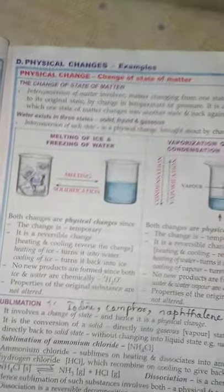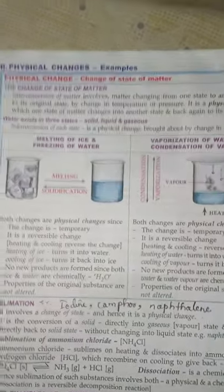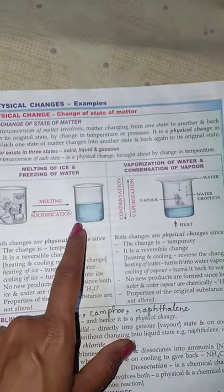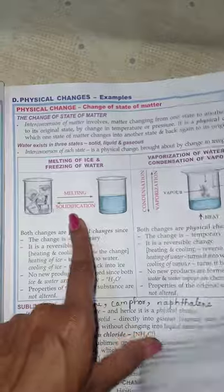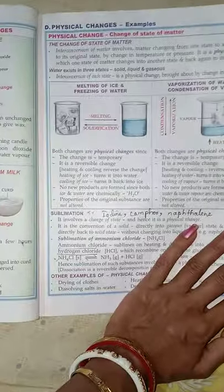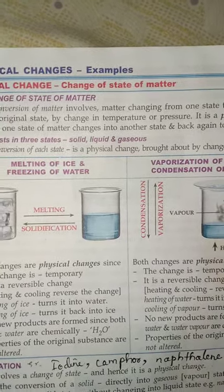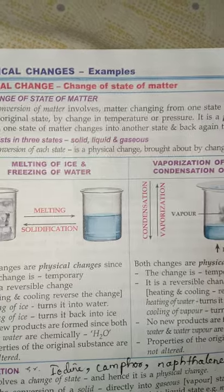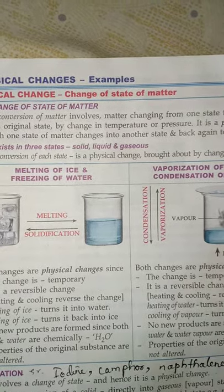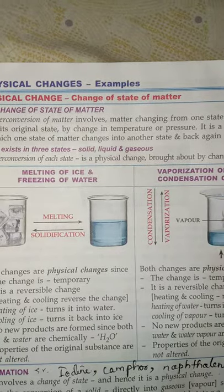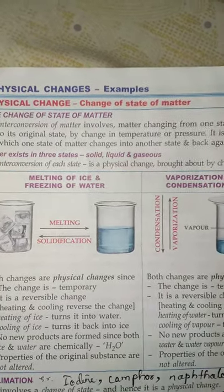Here we have the change in state of matter. Ice when it undergoes melting changes to water; water on getting frozen — the method is known as solidification — gives you ice back again. Both changes, ice to water or solid to liquid, are physical changes because they are temporary and reversible. On heating ice it turns to water and on cooling it turns back to ice again. No new products are formed and the properties are not altered.